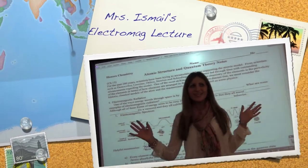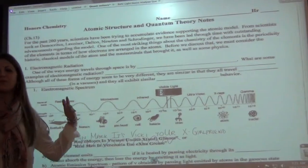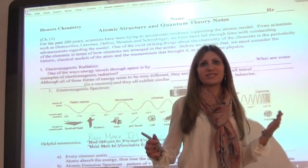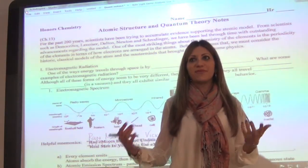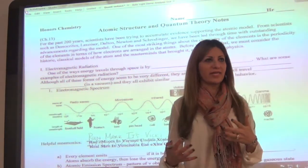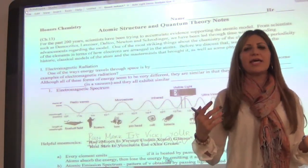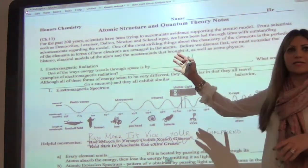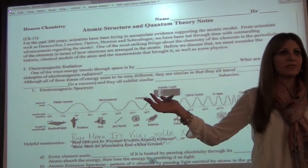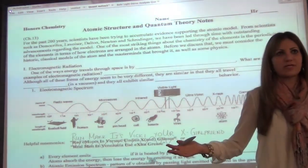Alright, happy day everyone. So what we're going to be talking about today is the quantum theory. But before we talk about the quantum theory, there are a whole bunch of different things that we need to make sure that we discuss — things like physics, waves, doing calculations, and how scientists were able to figure out what the model of the atom was like. We'll talk about that history, and that's what this whole unit is about: how do we know what the atom looks like at this point.